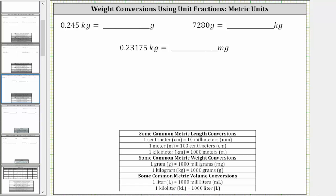In this video, we will perform metric weight conversions using unit fractions. In the first example, we want to convert 0.245 kilograms into grams. We begin by writing 0.245 kilograms as a fraction with a denominator of one.